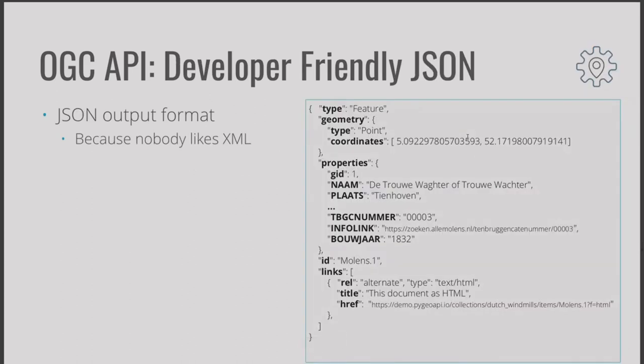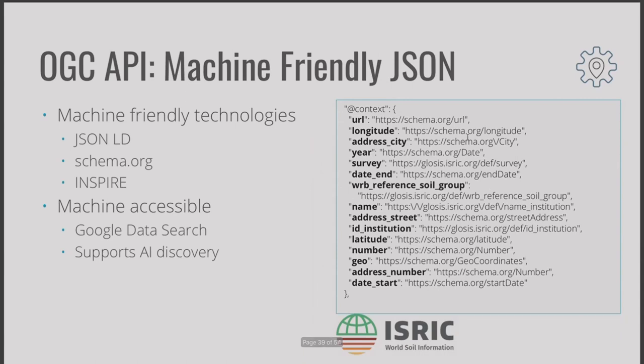It also offers developer-friendly JSON because nobody really likes playing with XML. And it's also providing machine-friendly JSON, so we can document the names in our dictionary and provide some context. The example here is using definitions provided by schema.org, which allows the data to be accessed by Inspire and so on.